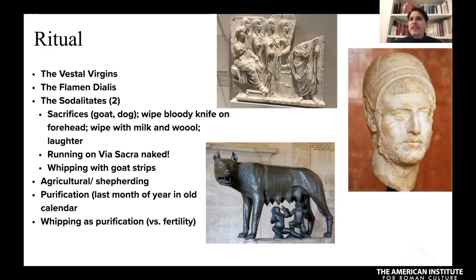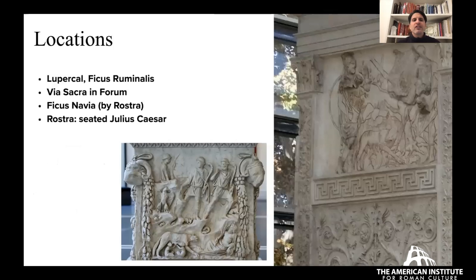We're looking at images of the Vestal Virgins, the Flamen Dialis with his distinctive hat, and the Capitoline She-Wolf with Renaissance twins added beneath. The Lupercal itself and the Ficus Ruminalis — the fig tree that grew spontaneously by the cave where the she-wolf suckled the twins — are somewhere at the base of the Palatine Hill, near the Circus Maximus, underneath the House of Augustus.